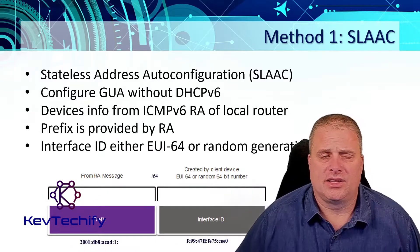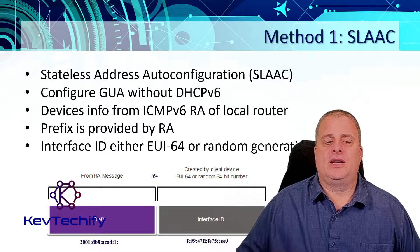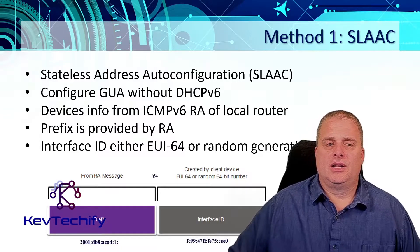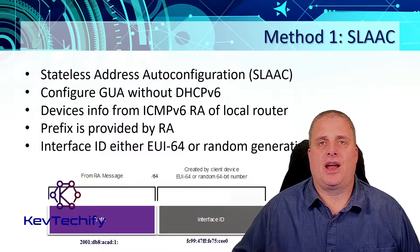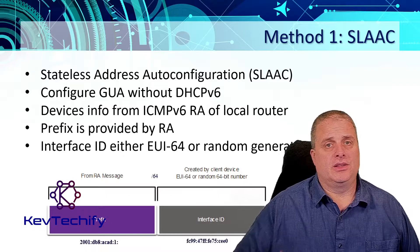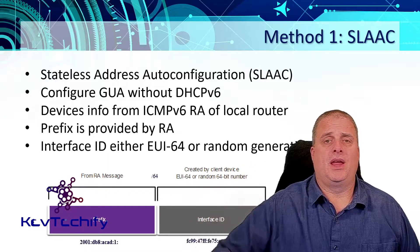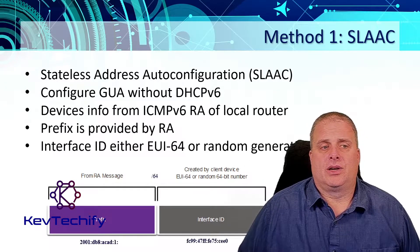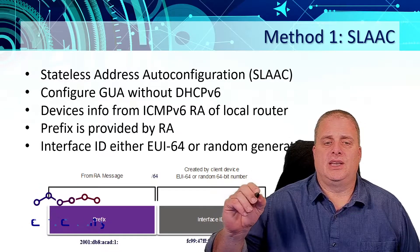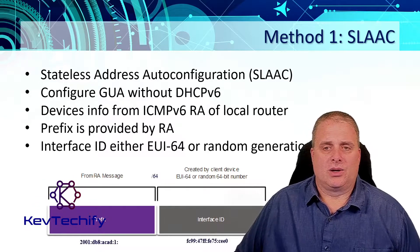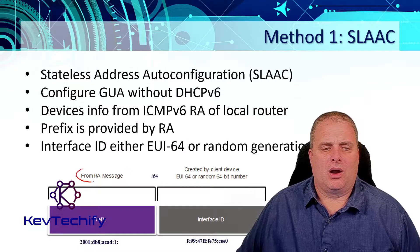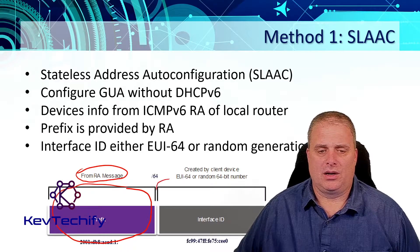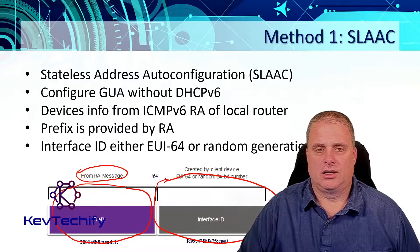The first method is SLAAC — stateless address auto configuration. It does not use a DHCP server, but devices still get an address dynamically from the IPv6 router advertisement. The router sends out the network prefix, DNS, domain name, and similar information. That provides the prefix — the slash number. The last part of the address is the interface ID, which is either generated using EUI-64 or a randomly generated portion. With SLAAC, the router advertisement gives the first 64 bits — the prefix — and then the client generates its own interface ID.